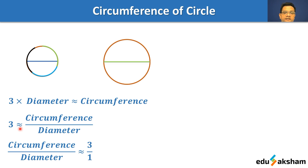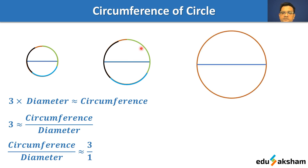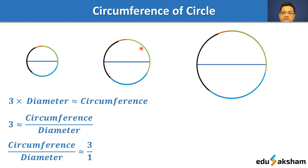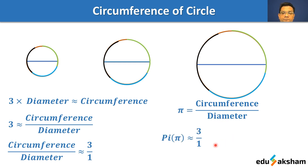We repeat this with another circle — wrapping the diameter along the boundary: first, second, and third time. Again, three times the diameter is a little less than the circumference. We do the same with a bigger circle, and again, three diameters is a little less than the circumference. So pi equals the ratio of circumference to diameter, which is approximately equal to 3. More precisely, we define pi as 3.14, and its approximate fractional value is 22 by 7.